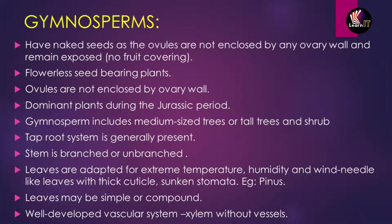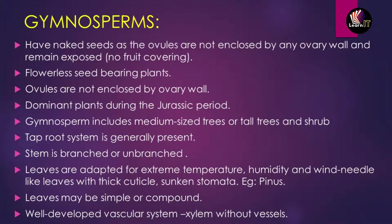Gymnosperms can be medium-sized trees or tall trees; the majority are shrubs. They contain a tap root system. Stems can be branched or unbranched. Leaves are adapted for extreme temperatures such as humidity and wind — needle-like leaves are thick in this group.